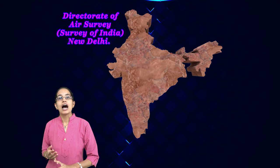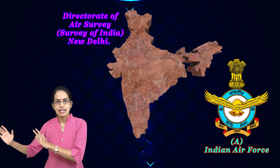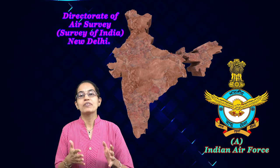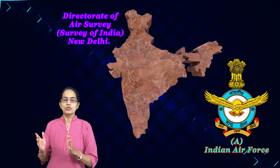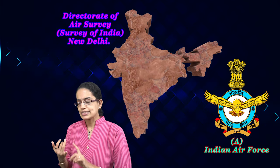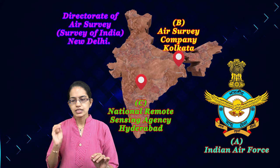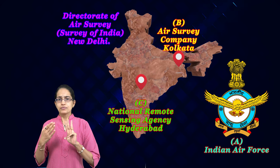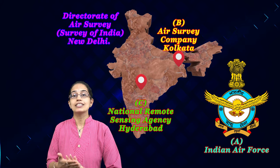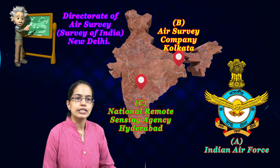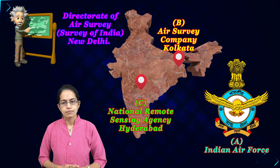Looking at India's scenario, there are three major wings that do air surveys under the Directorate of Air Survey. These three flying agencies are: Indian Air Force, marked as A; the Air Survey Company Kolkata, marked as B; and NRSA (National Remote Sensing Agency) based in Hyderabad, marked as C. Whenever you have an aerial photograph, the number would be marked A, B, or C so you can identify which agency captured it. If you want to procure aerial photographs for educational purposes, you can do so through the Directorate of Air Survey, Survey of India.